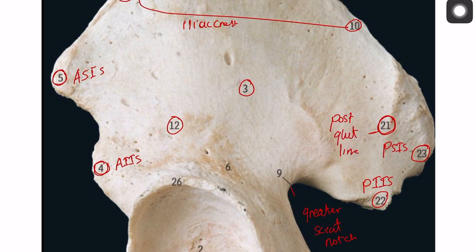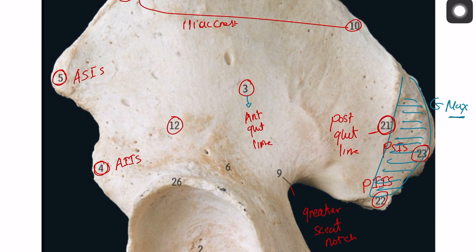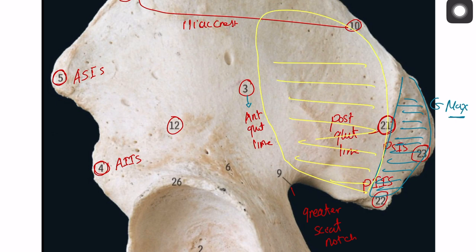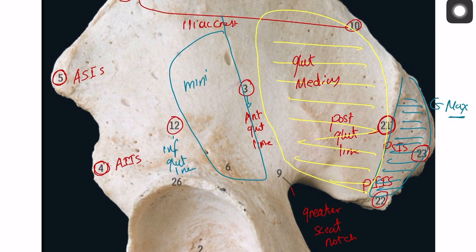There are three gluteal lines on the ilium representing the origins of the gluteal muscles. Number 21 is the posterior gluteal line — behind it is the origin of gluteus maximus. The anterior gluteal line marks the origin area for gluteus medius. The inferior gluteal line marks the origin of gluteus minimus.